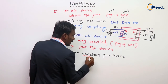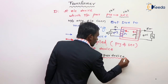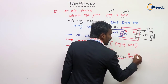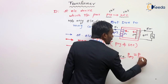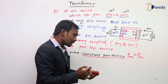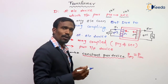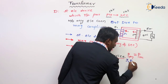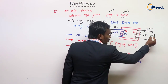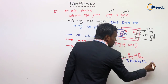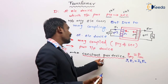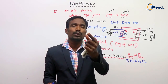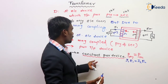Now, what is the meaning of constant power device? It is nothing but the power in the primary is exactly equal to the power in the secondary. That is, I1 times E1 is exactly equal to I2 times E2. This is a very important point.